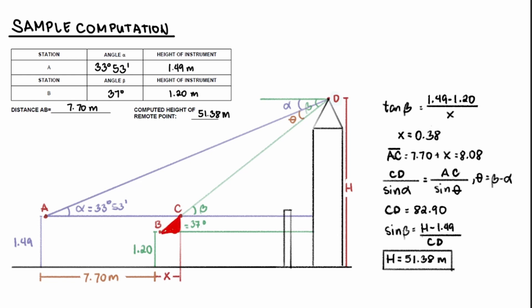From this, we can use the tangent function to solve for x. Tangent beta equals opposite over adjacent, where the opposite side is this line. And that line is just the difference between 1.49 and 1.20. Adjacent is the horizontal distance x, and beta is 37 degrees. So solving for x, we get 0.38 meters.